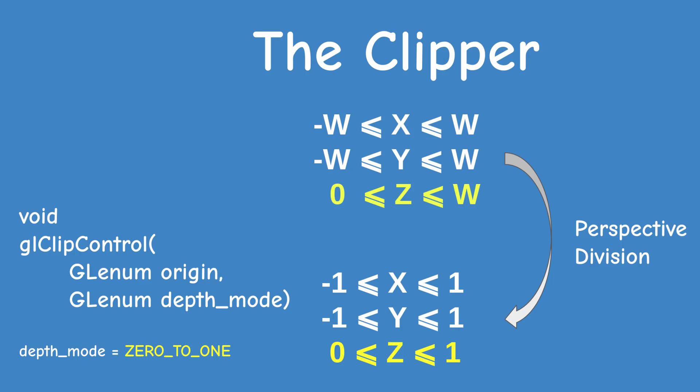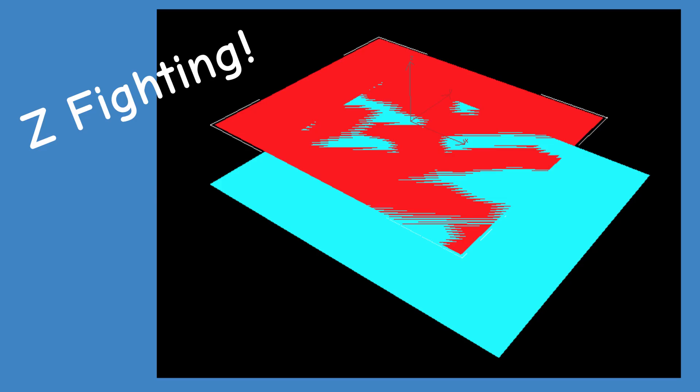This means that after perspective division, the value of Z can either be between minus 1 to 1 or 0 to 1. You may be wondering why we even need this flexibility, and the reason is that the handling of Z is very delicate and can lead to the notorious problem of Z fighting, where two overlapping triangles clash because their Z values are very close.